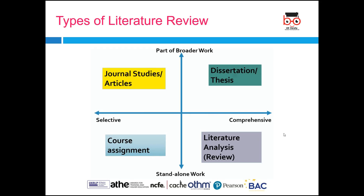On the other hand, your dissertation, thesis, or research proposal comprises both broader and comprehensive work, meaning you have to do an extensive review of literature. Ideally for a dissertation, you need to have at least 25 to 30 journals which you have reviewed and presented in your literature review chapter. In a proposal of 1,500 to 2,000 words, you would need to review approximately 10 to 15 journals. That is the difference between a selective review and a comprehensive review.